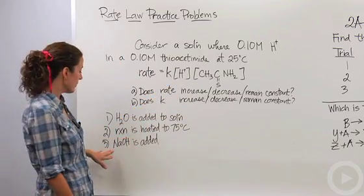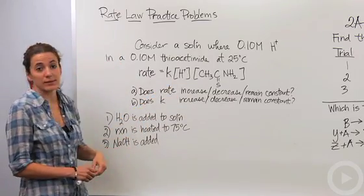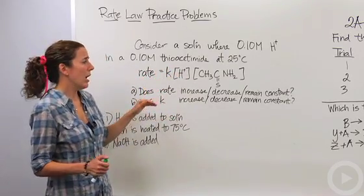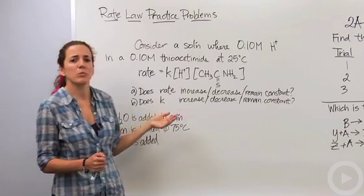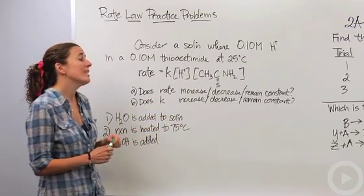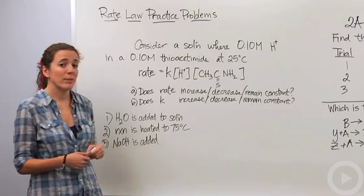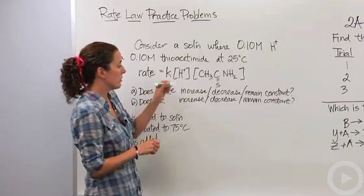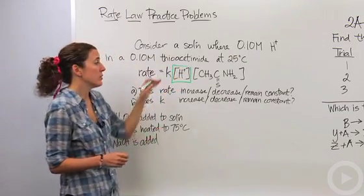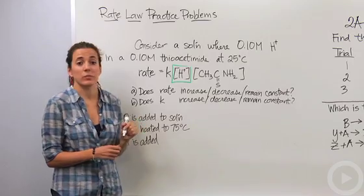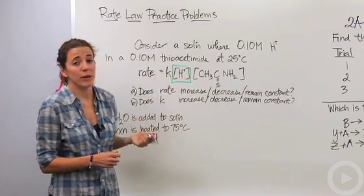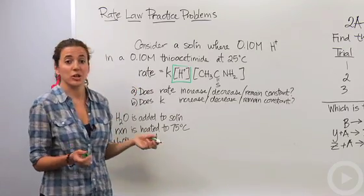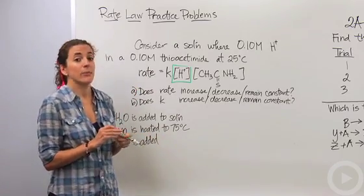What if we add sodium hydroxide to this solution? Why would that make a difference? Because nothing in here is sodium hydroxide — it may dilute the system, but the concentrations are still going to be quite similar. The main thing it's actually going to affect is that sodium hydroxide, being a base, will react with this acid. So the H⁺ concentration will go down, which will decrease the rate of reaction. K will not change at all, because again, K only changes when temperature changes.